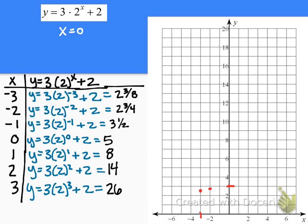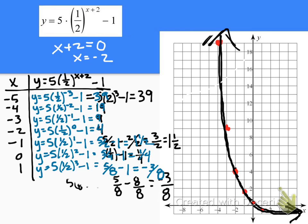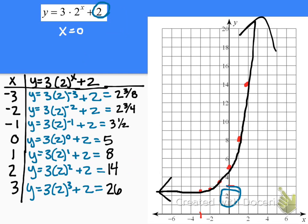Graphing those points: at negative 2, I'm at 2 and 3 fourths; at negative 1, at 3 and 1 half; at 0, at 5; at 1, at 8; at 2, at 14; and 3 is off the graph, so we know it goes steep after that. This is my approximate sketch. You'll notice there's an asymptote — the function levels out horizontally near y equals 2, and you can see the plus 2 in the equation. In the last example it leveled out near negative 1, and we had a minus 1 in that equation — an interesting observation.